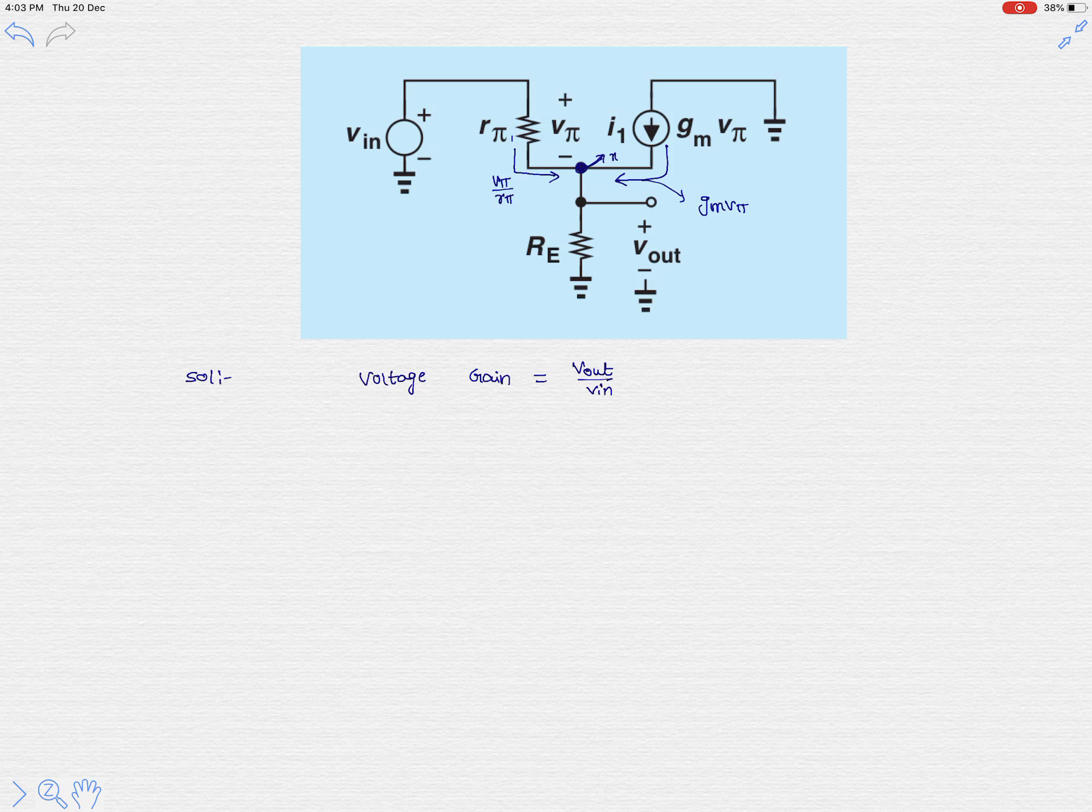Clearly, let's say this is some i_out output current. So output current i_out is, we can simply write, v_π over r_π plus gm v_π. This is basic KCL equation actually.